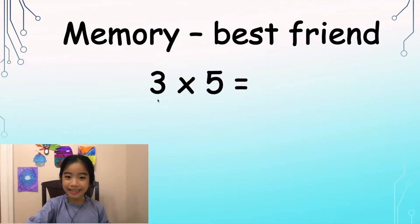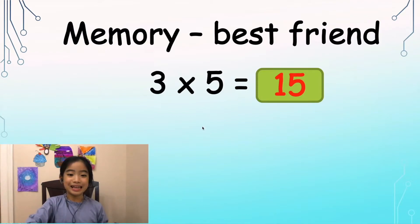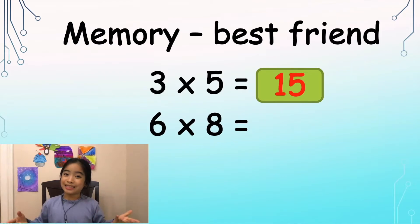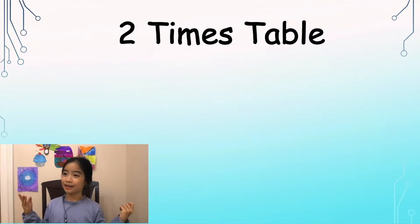Here is 3 times 5. And if you memorized the multiplication times table, you may know that it is 15. And here we have 6 times 8. And if you memorized it, it is 48. So what if you don't know the multiplication times table? Well, in this video, we'll talk about the 2 times table, 4 times table, and the 5 times table.